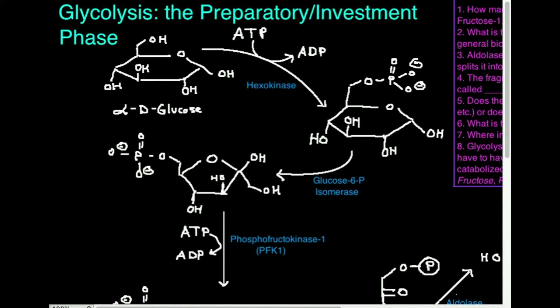We'll talk about why they're called that as we go through the video, and then we have some review questions at the very end of each video. The first thing I want to do is say what we start out with. What is the main purpose of glycolysis? Generally, glycolysis is a metabolic pathway that takes glucose, or a six-carbon sugar, and breaks it down into two three-carbon fragments. We're going to look at this with respect to glucose — there are some other ones that can be broken down by glycolysis, but let's focus on glucose because that's the main idea. This is the cyclic structure of glucose.